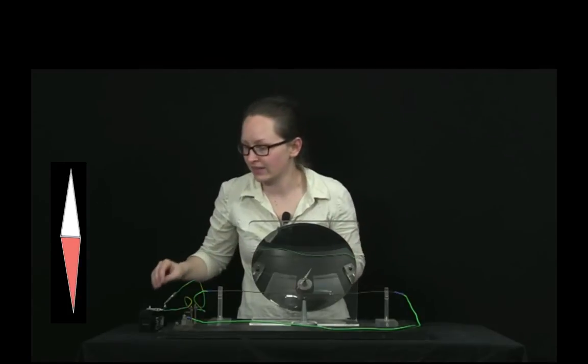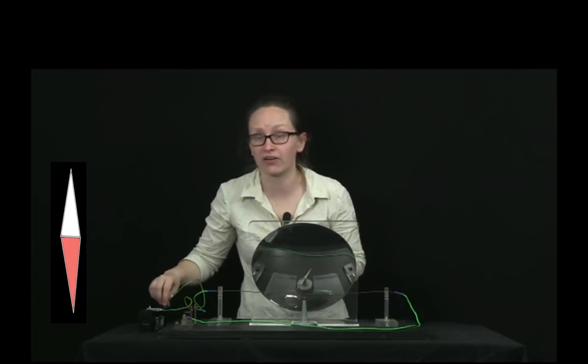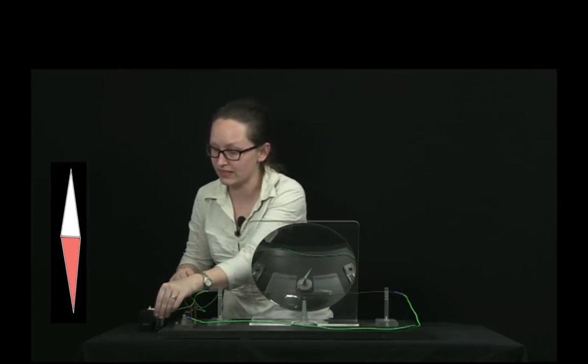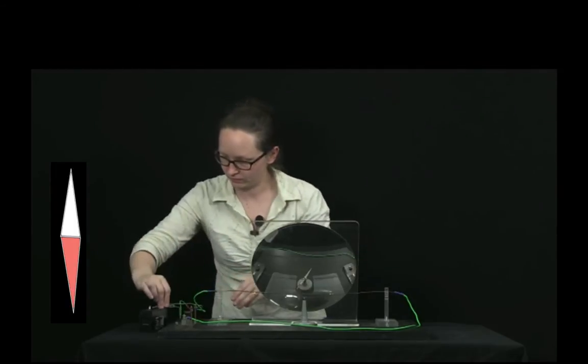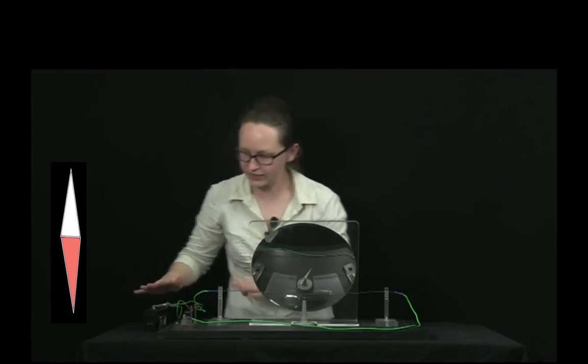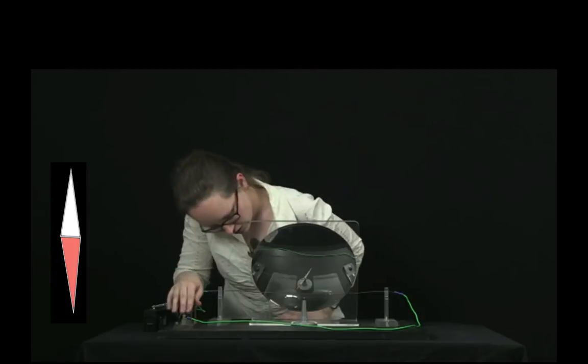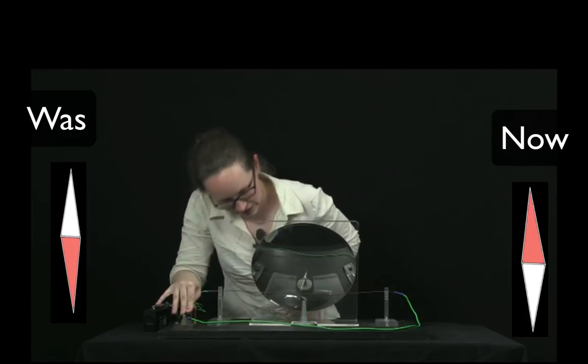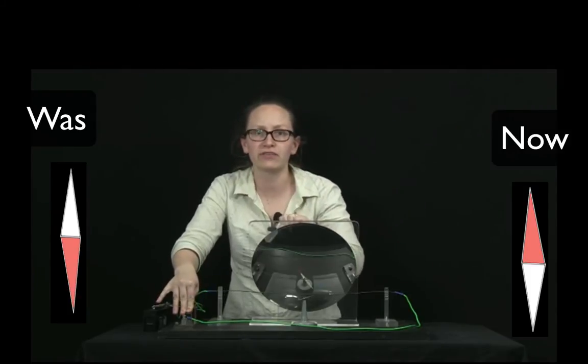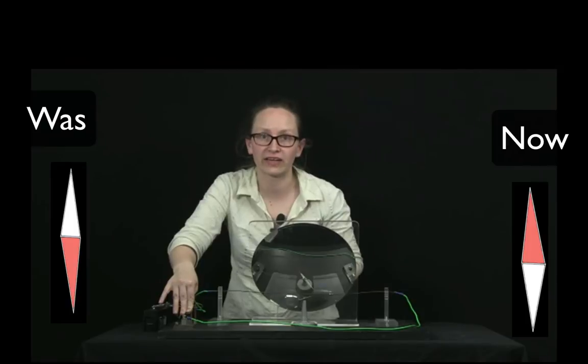So to prove that, let's switch the direction which the current is flowing and see if the compass needle points in the opposite direction. Okay. So the direction switched, switched my switch. And the red bit is now pointing out of the screen towards you, whereas previously it was pointing back into the screen.